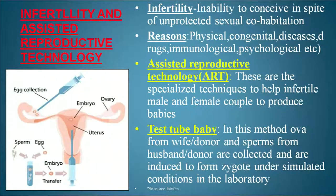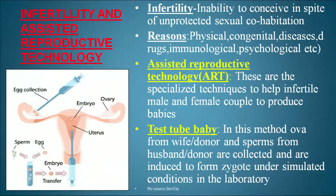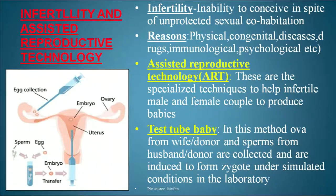Infertility is the inability to conceive despite unprotected sexual cohabitation. Those who exhibit infertility are called infertile couples. Reasons behind infertility include physical, congenital, drug-related, immunological, and psychological causes. To address infertility, we have Assisted Reproductive Technology (ART) — specialized techniques to help infertile male and female couples produce babies.